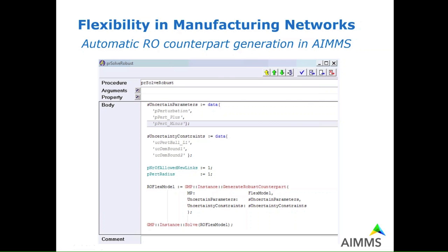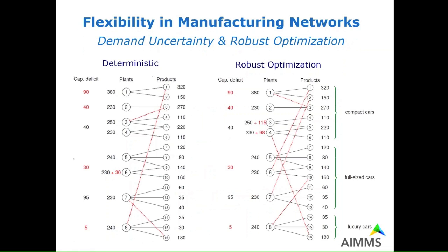Specifically in this situation, we have seen that with robust optimization we can get qualitatively different and better solutions — when evaluated against uncertain demands using, for example, a simulation approach — compared with solutions based only on deterministic values of demand.